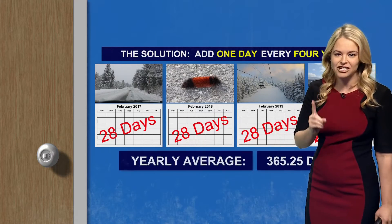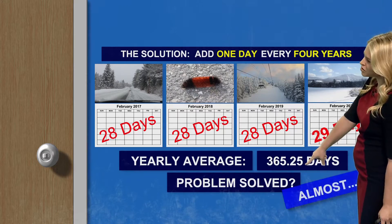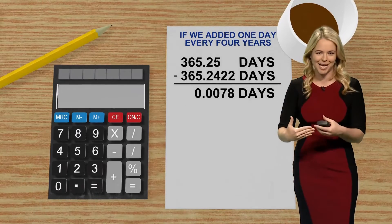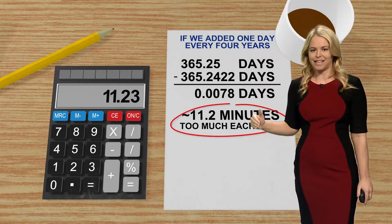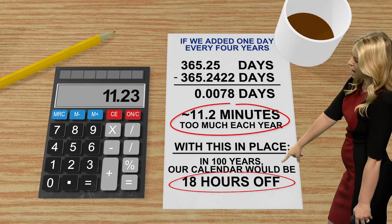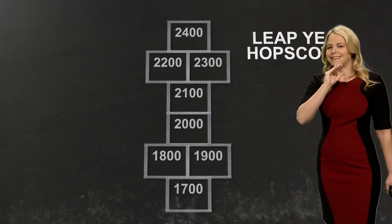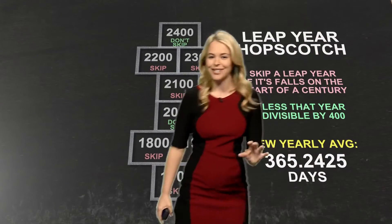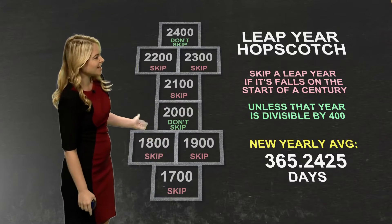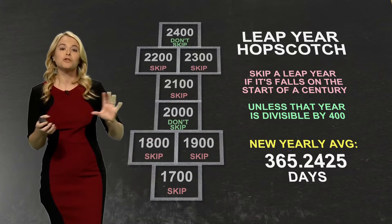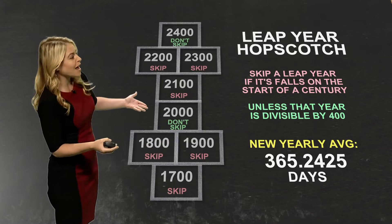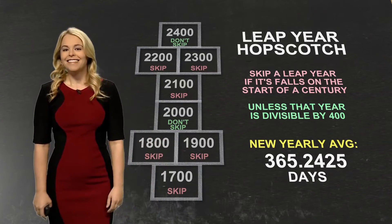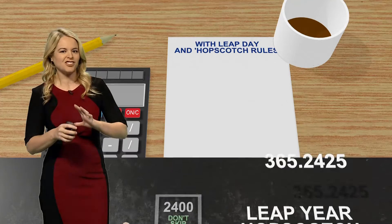Problem solved — but not completely. Back to the calculations: at this rate, in 100 years we're still going to be off by 18 hours. So we need to account for that too. Not all century years are leap years — 1700, 1800, and 1900 were skipped. The year 2000 was a leap year. For a century year to be a leap year, it needs to be evenly divisible by 400.